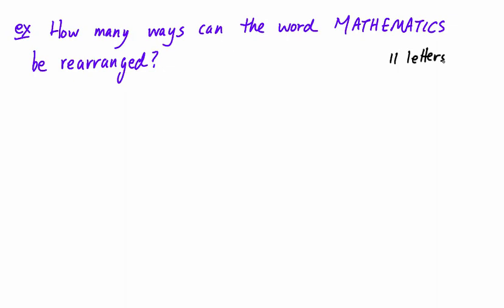But the problem is, of those 11 letters, you can't just say, well there's 11 factorial, I've got 11 choices, then 10, then 9, then 8. We can't just do that, because there happen to be 2 M's, and there happen to be 2 A's, and there happen to be a couple of T's in here that repeat. And when you have letters, or identical objects, when you have identical objects, then you have to adapt the formula so that you can take care of that.